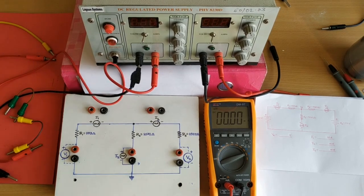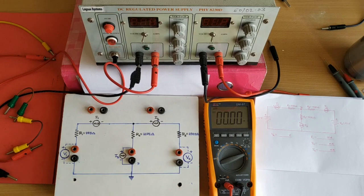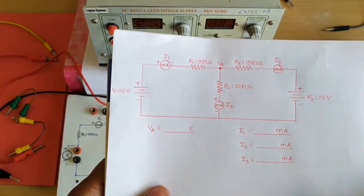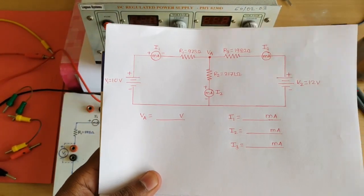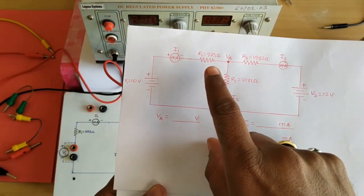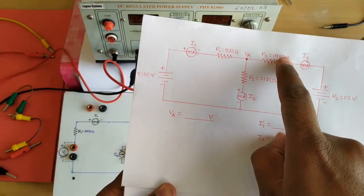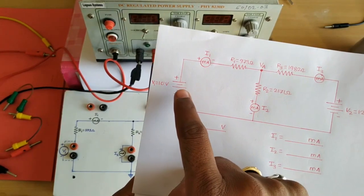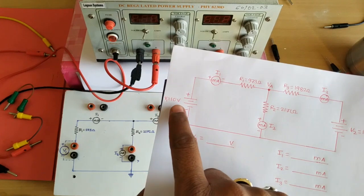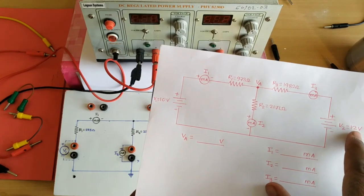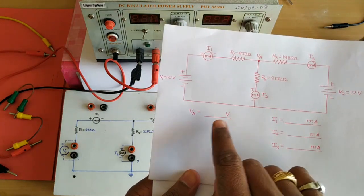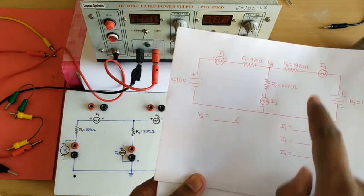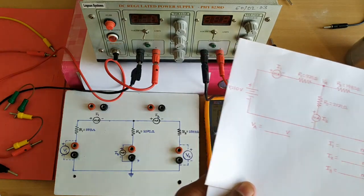Hello friends and welcome back. Today we will perform an experiment on nodal analysis. For that purpose we are using this experimental setup. This is our circuit diagram. Here you can see we have a T-network which consists of three resistances R1, R2, and R3. We are connecting three ammeters for measuring the current. We have to measure the voltage of node A, as well as the current flowing through each resistance: I1, I2, and I3.